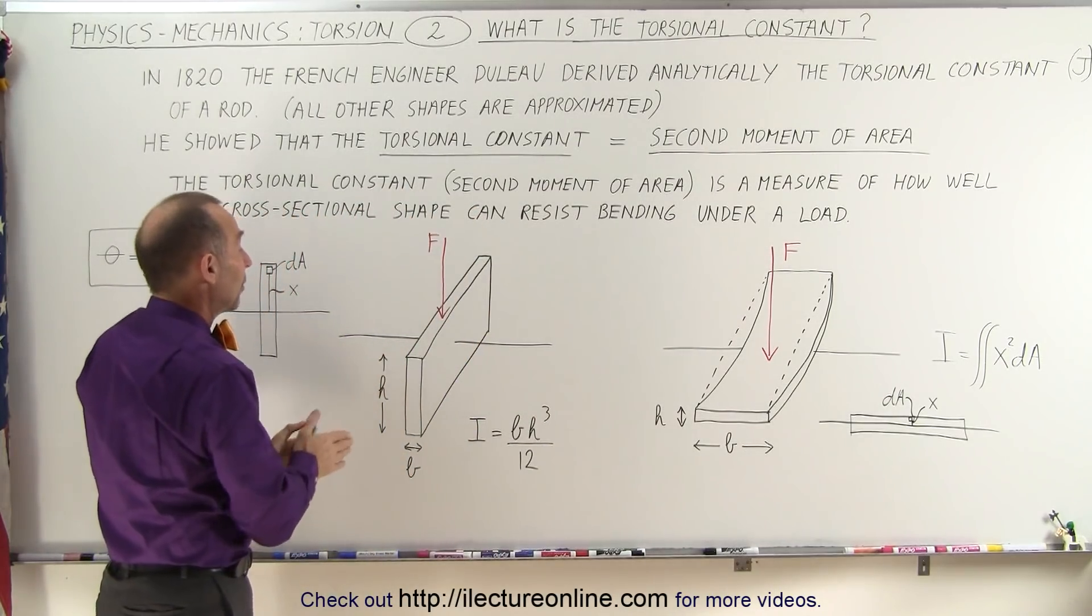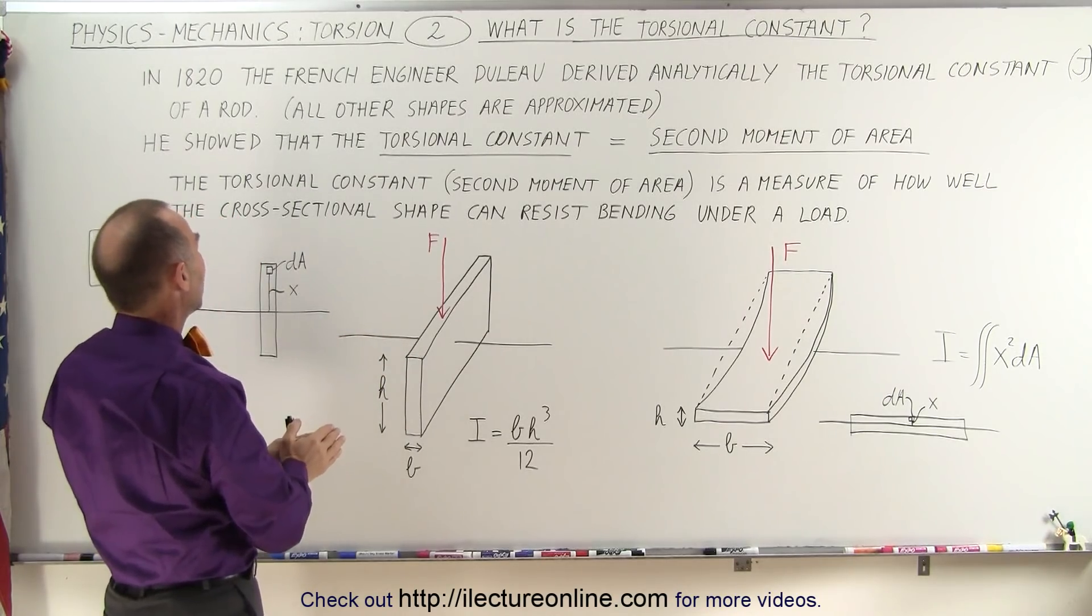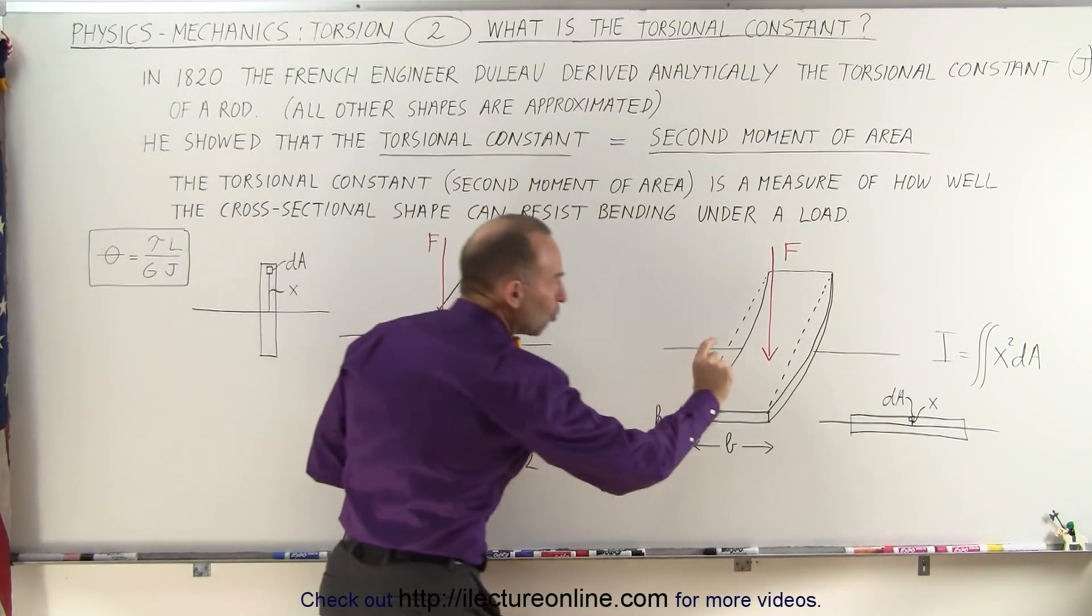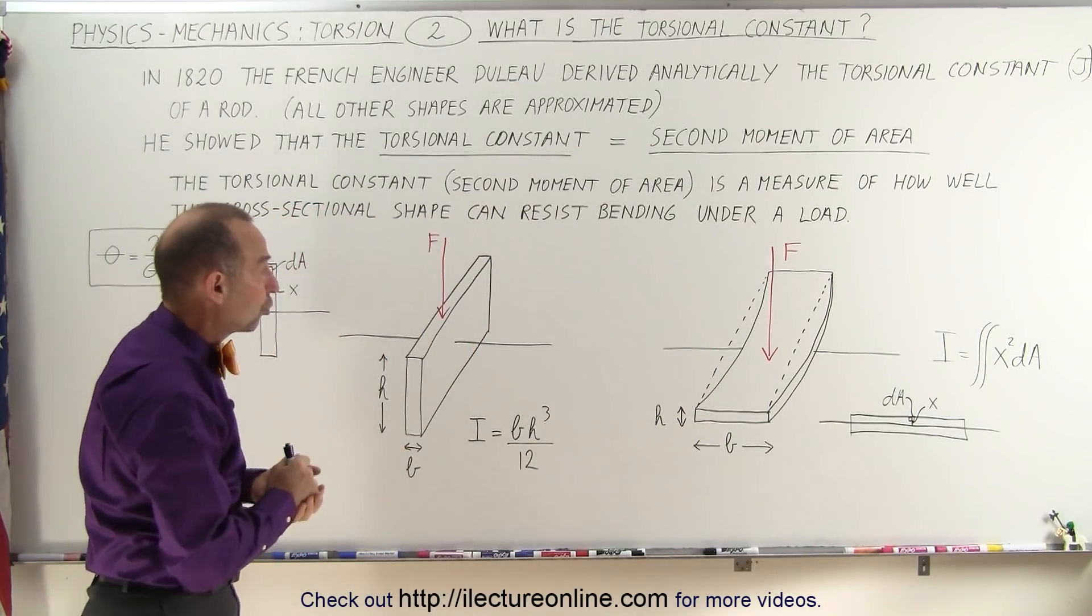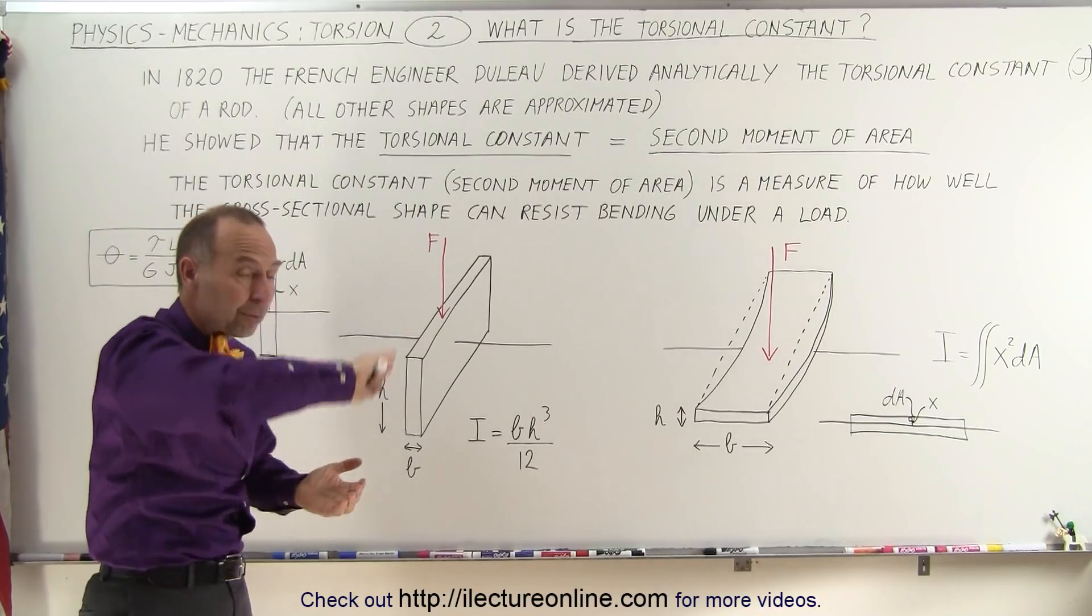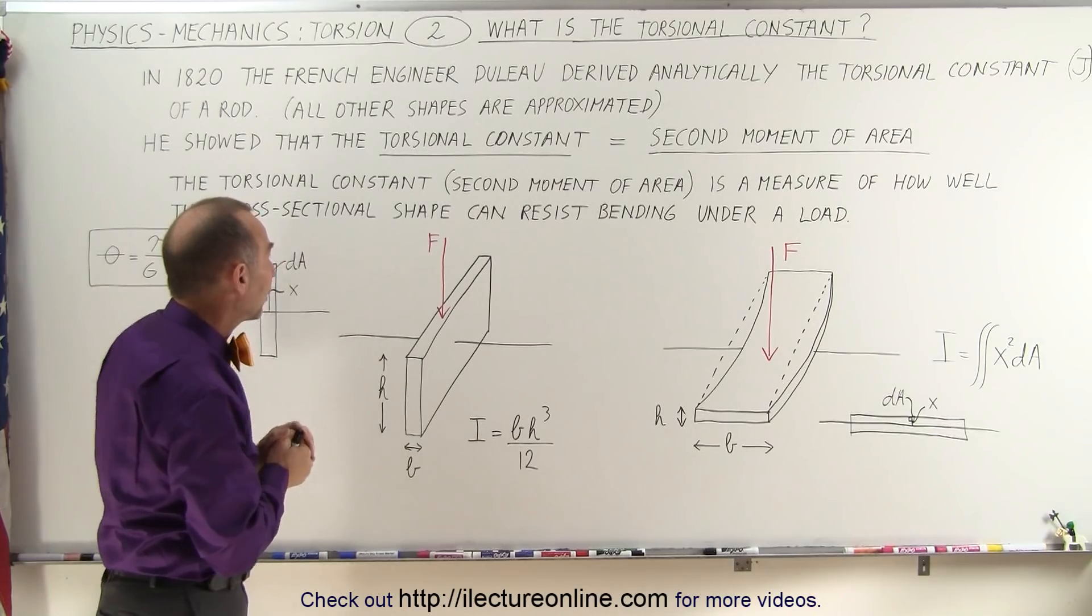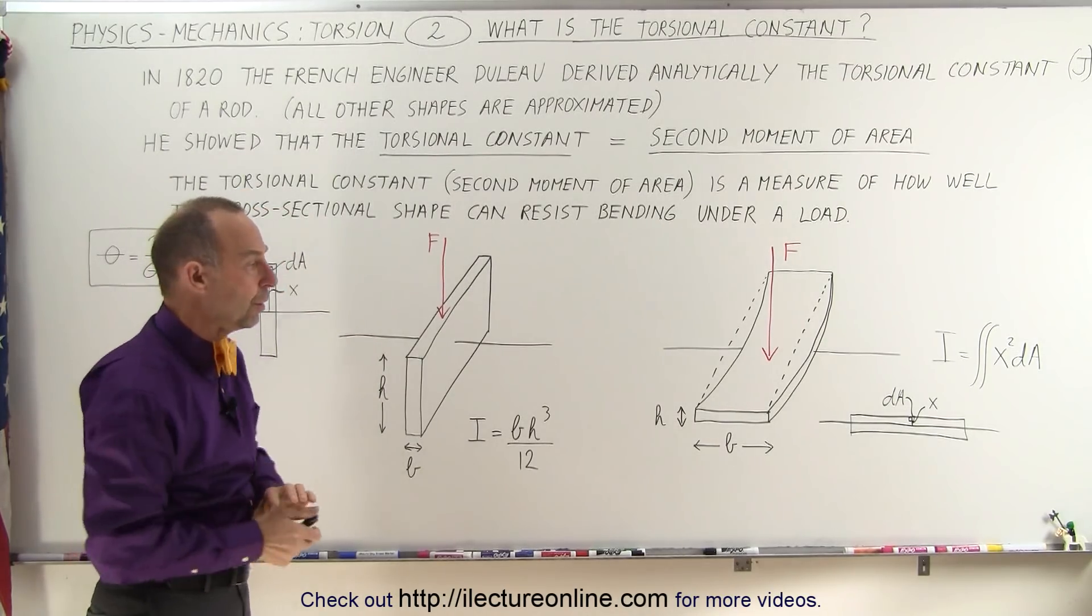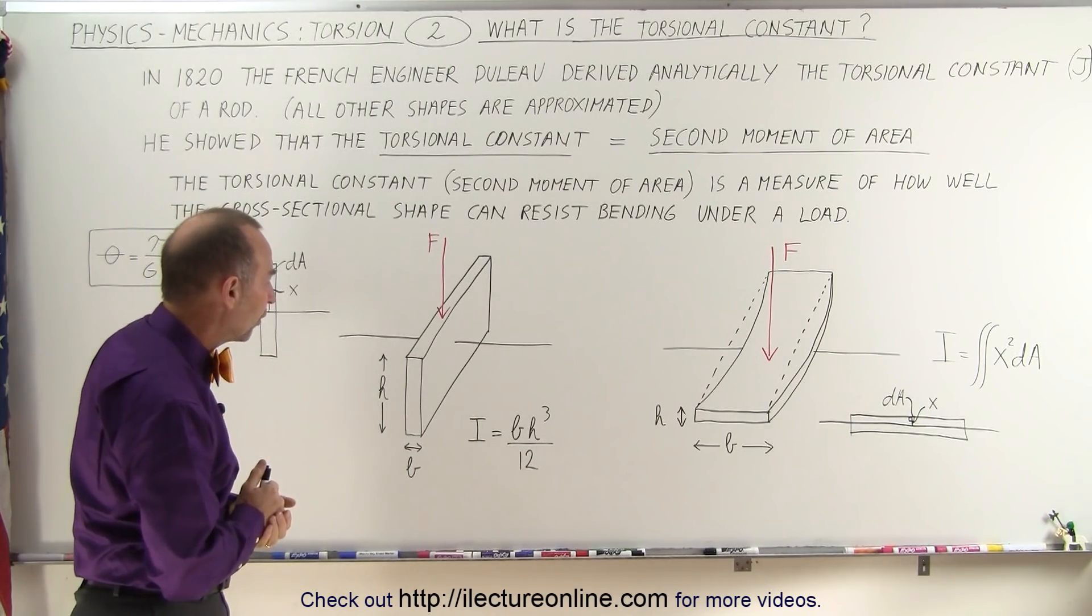So you can look at this right here and say, well, this must have a high second moment of area, or you could say this must have a high torsional constant. This must have a smaller second moment of area or a smaller torsional constant because you can see that the board bends a lot. If it resists bending, it has a high second moment of area or a high torsional constant. If it bends a lot, it has a low second moment of area or torsional constant.